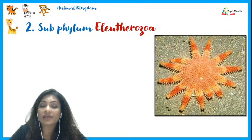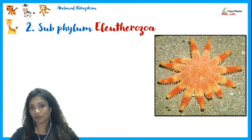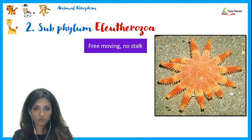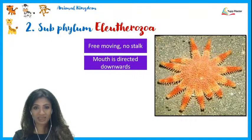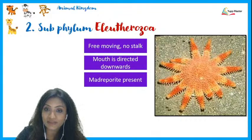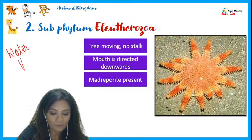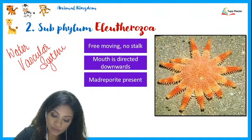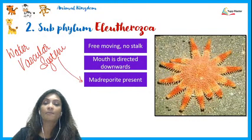The second subphylum is Eleutherozoa. These organisms are freely moving — no stalk binding them to a substratum. The mouth is directed downward (ventral position). The madriporite is present here, leading water into the water vascular system. This subphylum contains four classes.